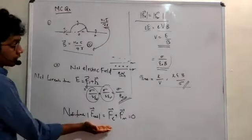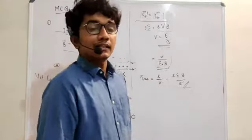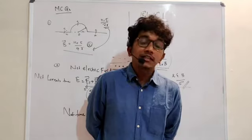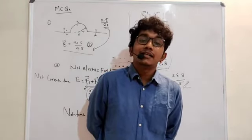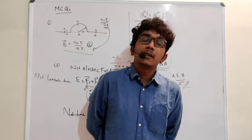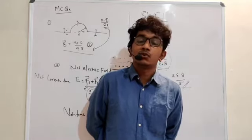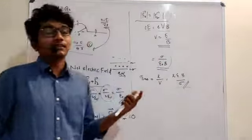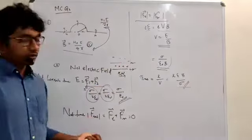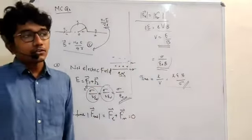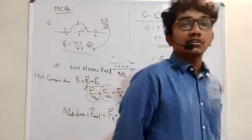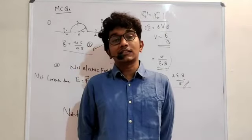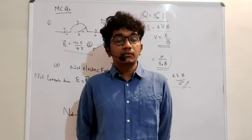Two important points for this question: first, why is the net force equal to zero? Because the question states the electron moves in a straight line at constant velocity — constant velocity means zero acceleration, which means zero net force. That is why we set the net Lorentz force to zero. Whenever a question involves a particle moving at constant velocity, always apply the condition that net force equals zero.